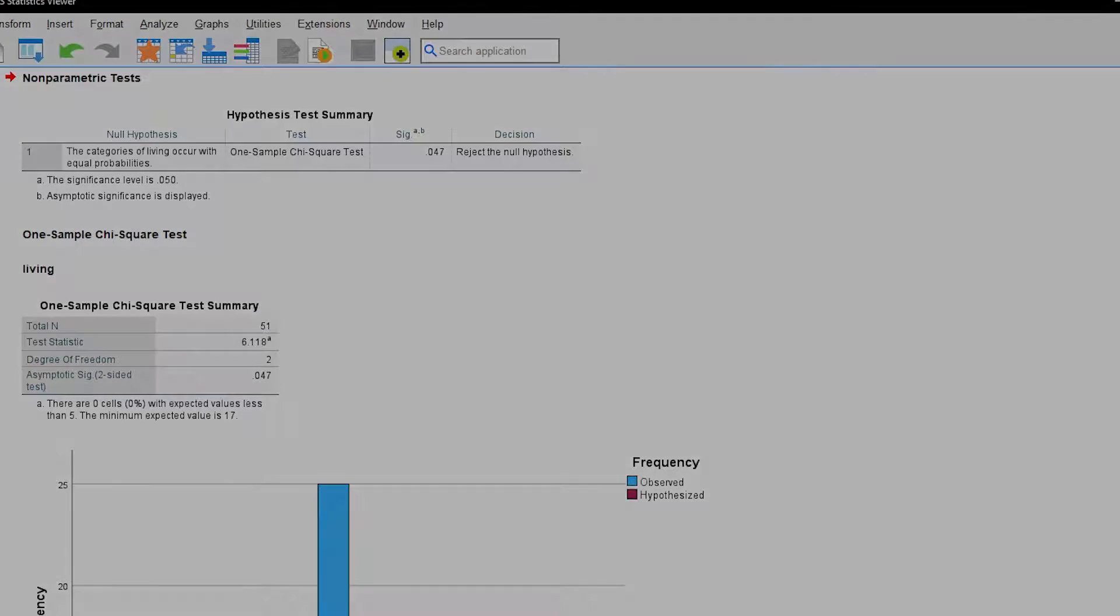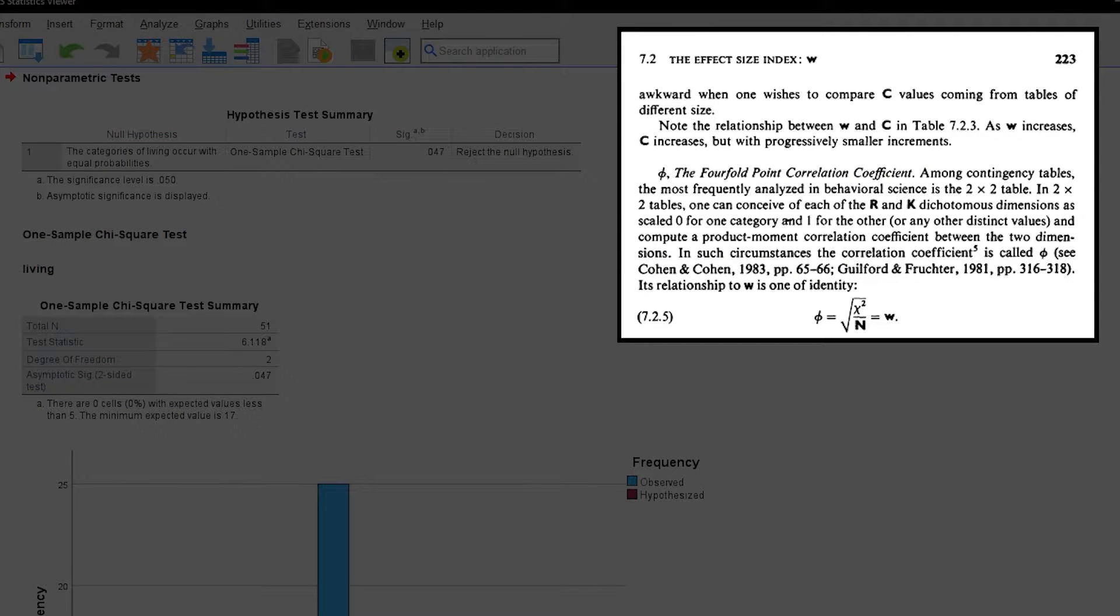The formula to calculate Omega is provided in Cohen 88, page 223. Omega equals the square root of the chi-square value divided by the sample size.